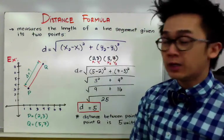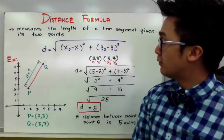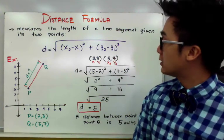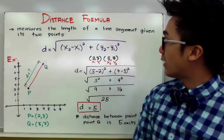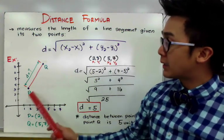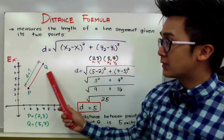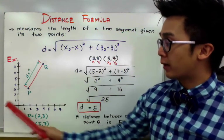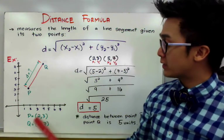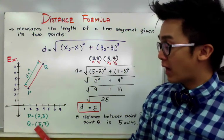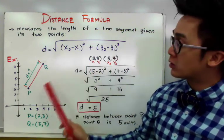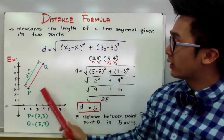The distance formula is equal to the square root of the quantity (x₂ minus x₁) squared plus the quantity (y₂ minus y₁) squared. Let's say P and Q are given points in our xy plane where P is at (2, 3) and Q is at (5, 7). By using our distance formula, we'll be able to measure the distance between these two points.